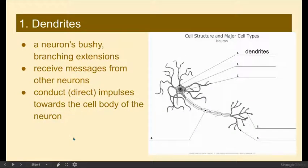We're going to start with the dendrites. The dendrites are easily identifiable bushy, branching extensions that receive messages from other neurons and conduct that electrical impulse towards the cell body. You can see this is where we'd see all of these action potentials begin, traveling towards the cell body. It is called the dendrite, so please put that label.